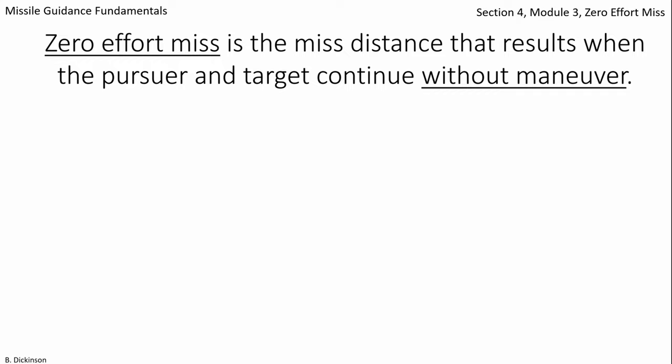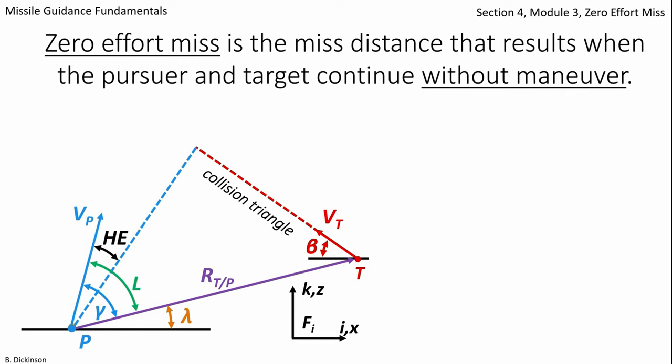Zero effort miss is the miss-distance that results when the pursuer and target continue without maneuver. Here's our engagement diagram. Pursuer having some heading error. Target. Constant velocity along a certain trajectory.